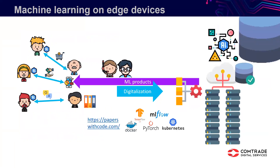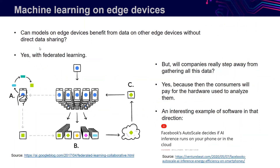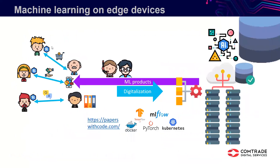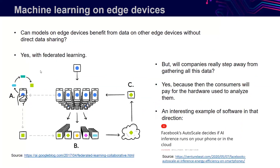If we do machine learning on edge devices, we basically give our users small machine learning models that run on their own specialized devices. Of course, the question is what happens with all the data. Obviously, if they're not sending all the data to the cloud, can they benefit from the interactions of other users without intruding into their privacy? This is a very important question, and there seems to be at least a partial solution — quite an interesting one.